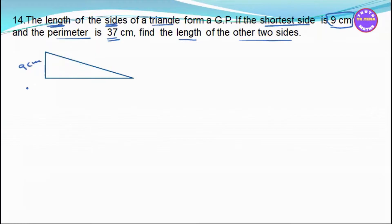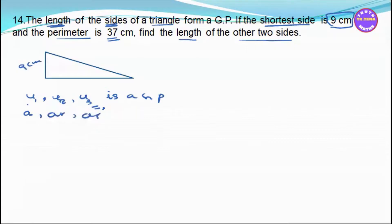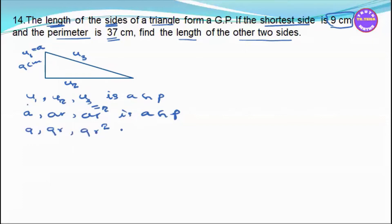The sequence is U1, U2, U3 forming a GP. We set U1 = a/r, U2 = a, U3 = ar. So U3 is equal to 9r and U1 is equal to 9 divided by r, giving us 9r squared.